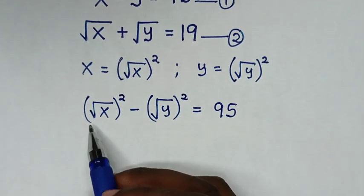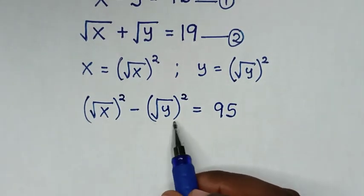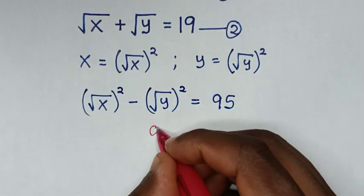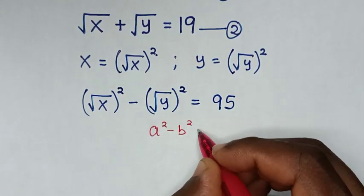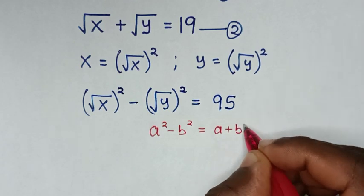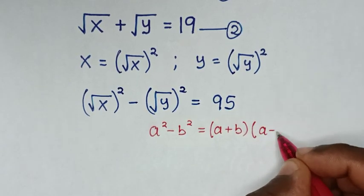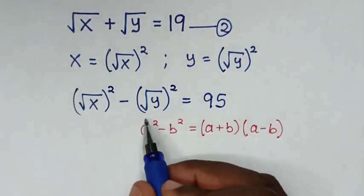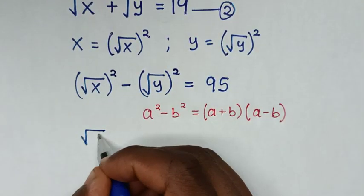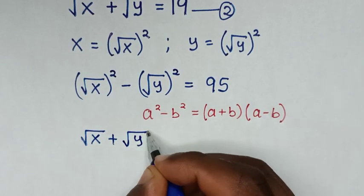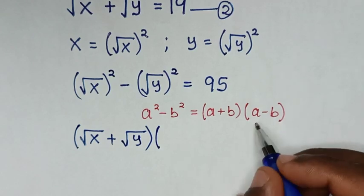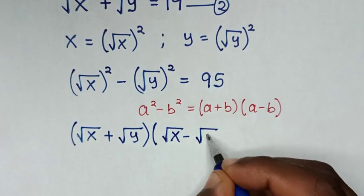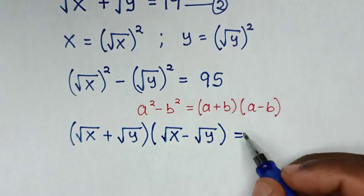In the next step, square root of x squared minus square root of y squared is in the form of a difference of squares. We apply the rule: a squared minus b squared equals a plus b bracket times a minus b bracket. So it becomes: square root of x plus square root of y, bracket times square root of x minus square root of y, bracket, equal to 95.